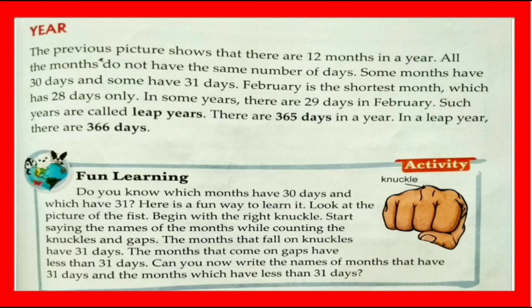Do you know which months have 30 days and which have 31? Here is a fun way to learn it — look at the picture of the fist. Begin with the right knuckle and start saying the names of the months while counting the knuckles and gaps. The months that fall on knuckles have 31 days, and the months that come on gaps have less than 31 days. Can you now write the names of months that have 31 days and those which have less than 31 days?